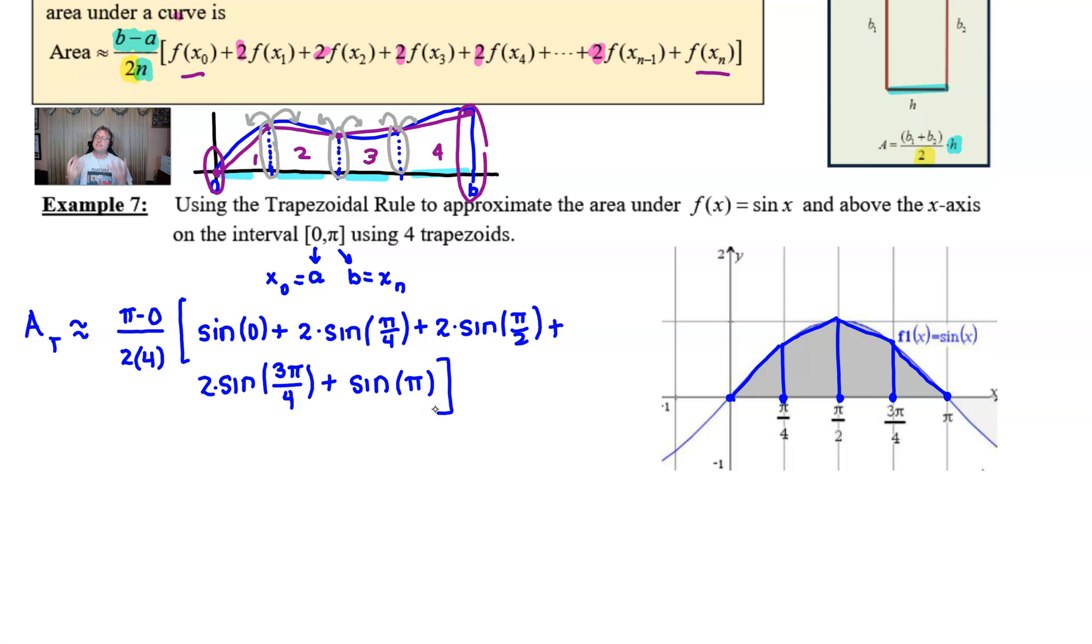And once we simplify this expression, we have the area approximation that we want. So we would have π over eight at the front, and then hopefully you all see that the sine of zero is of course zero. The sine of π over four, that's going to be radical two over two. And the sine of π over two, that's going to be one.